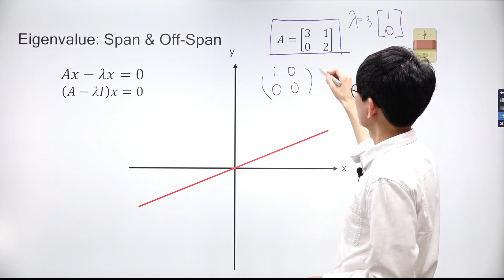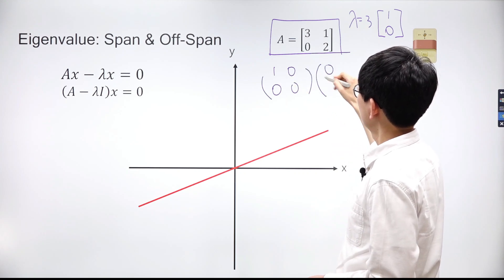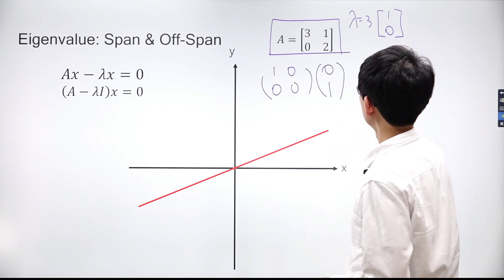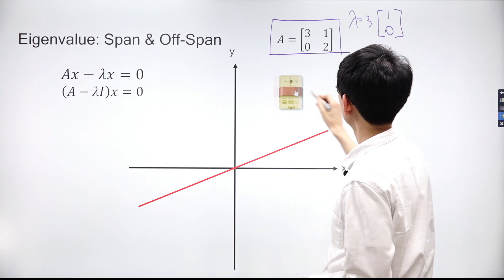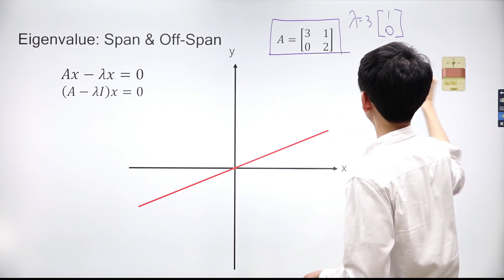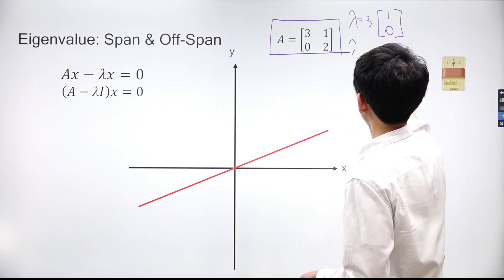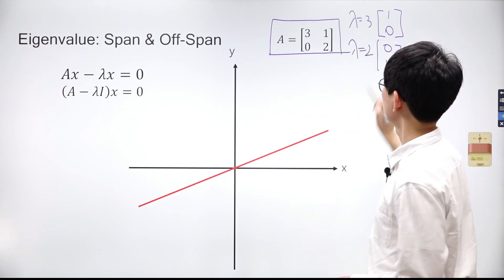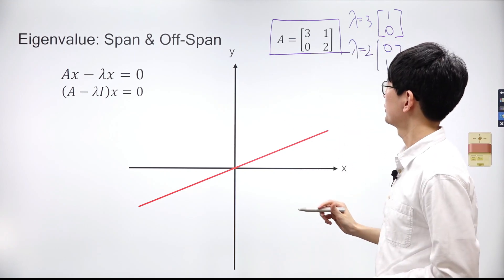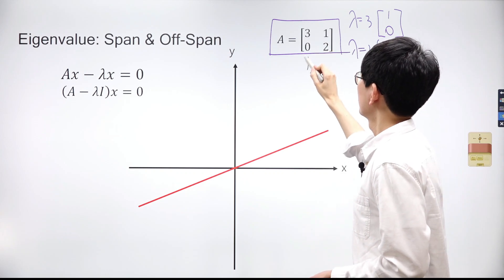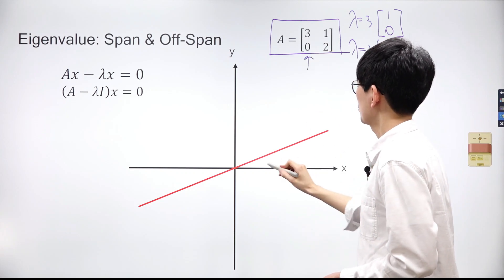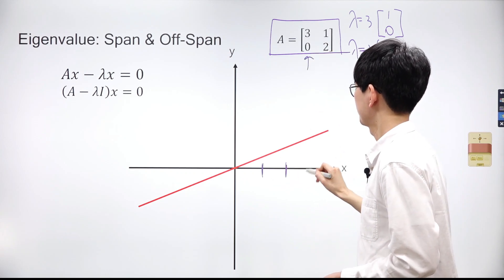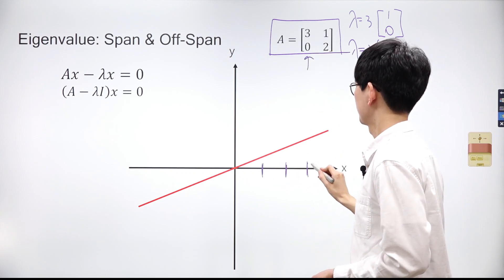The values in the matrix A minus lambda I are 1, 0, 0, and 0. Thus, the eigenvector is (0, 1). The eigenvector of A is (0, 1) when the eigenvalue is 2.